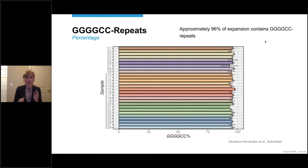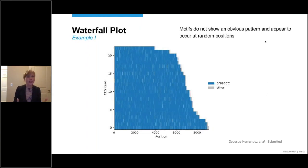You can also visualize this in a waterfall plot, as shown here on this slide. Where the CCS reads are shown on the y-axis, more than 20 for this individual. And the position, the nucleotide's position, is specified on the x-axis. If a GGGGCC motif is present, it's shown in blue, bright blue. And if it's another type of motif, it's shown in gray, as gray lines. So you do see a lot of blue here, and some gray lines. But really, there is no obvious pattern. And these interruptions appear to occur at random positions.